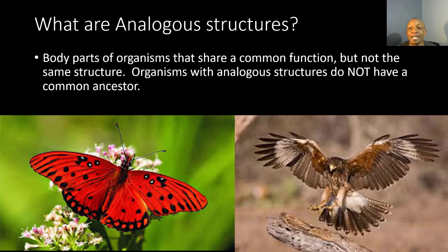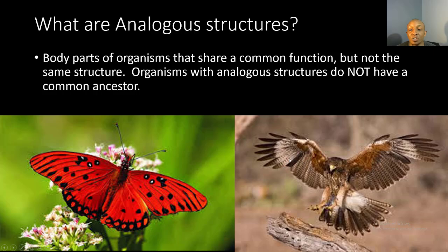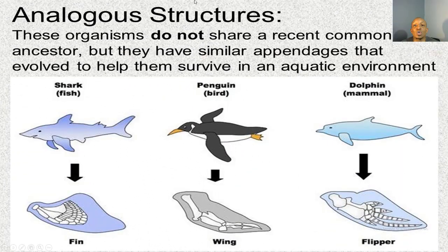So what are analogous structures? They are body parts of organisms that share a common function but not the same structure. Organisms with analogous structures do not have a common ancestor. For example, a butterfly and a hawk both have wings that allow them to fly, but if you look closely at the structure of their wings, it is very different — because they do not have a common ancestor.